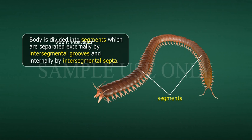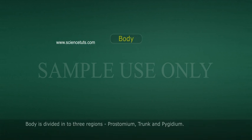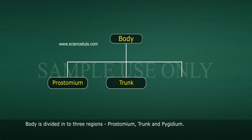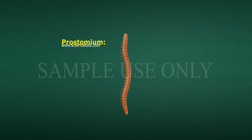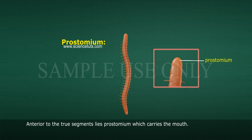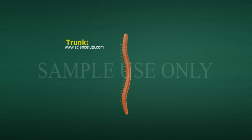The body is divided into three regions: prostomium, trunk, and pygidium. The prostomium is anterior to the first segment and carries the mouth.